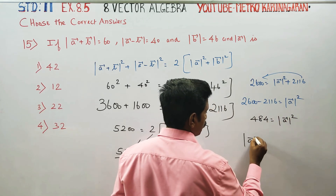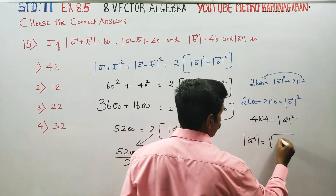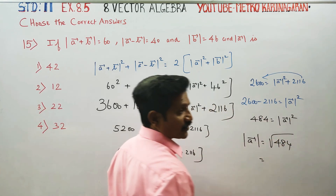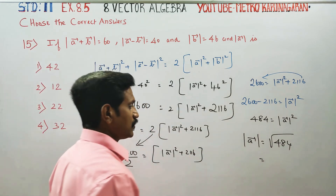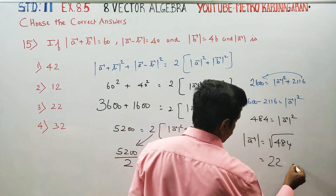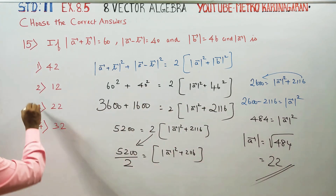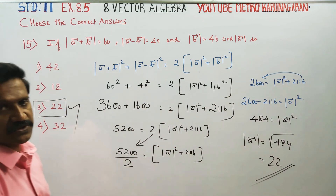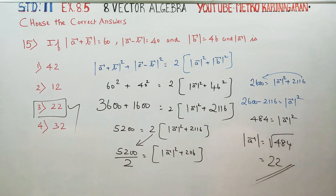So magnitude of A is equal to square root of 484. The square root of 484 is 22, since 22 into 22 is 484. Therefore the answer is 22. The third option is the best answer for this one mark question. Thank you.